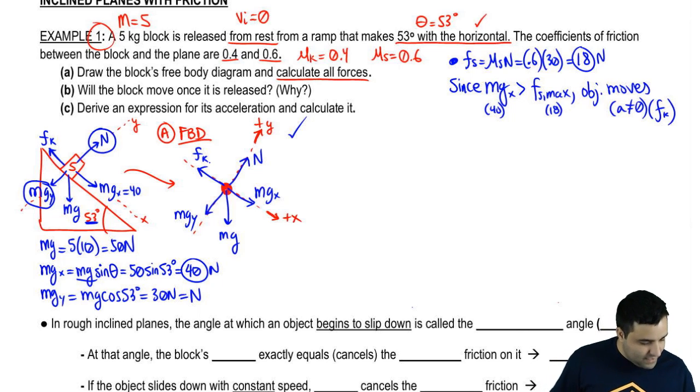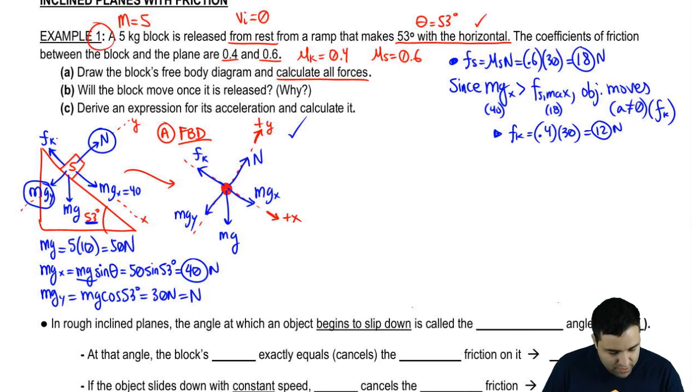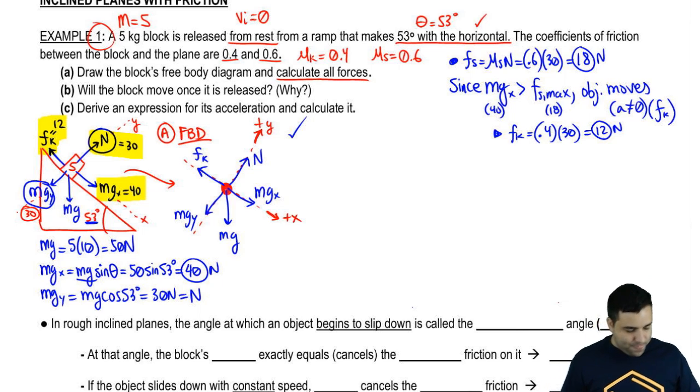Let's put a kinetic there. And I can calculate kinetic friction. Friction kinetic is 0.4 times 30, which is 12 newtons. So I got a 40 here. I got 12 here. And normal, we already said it was 30. So 40, 30, 12. This here is 30 as well. That's part A.